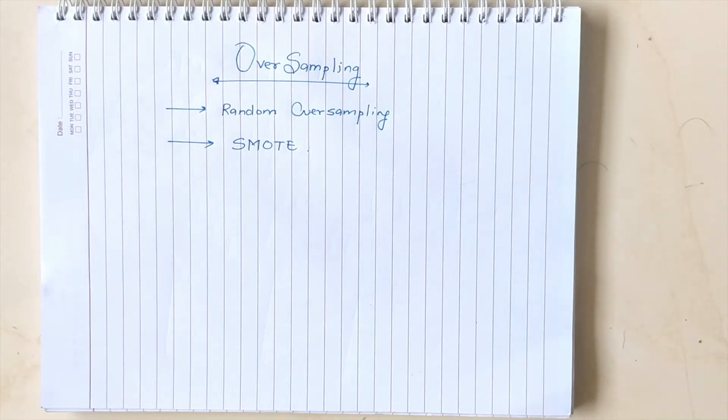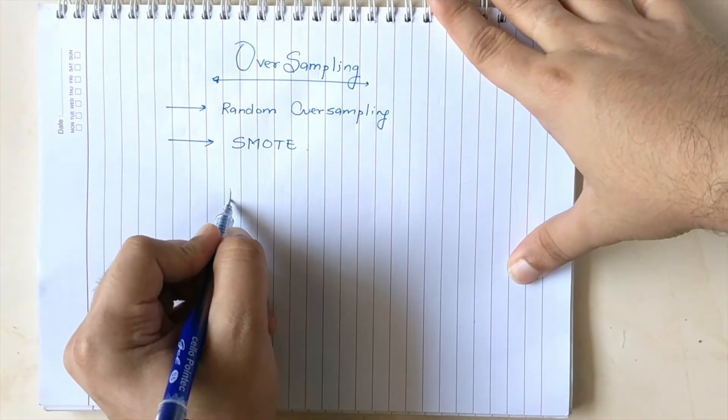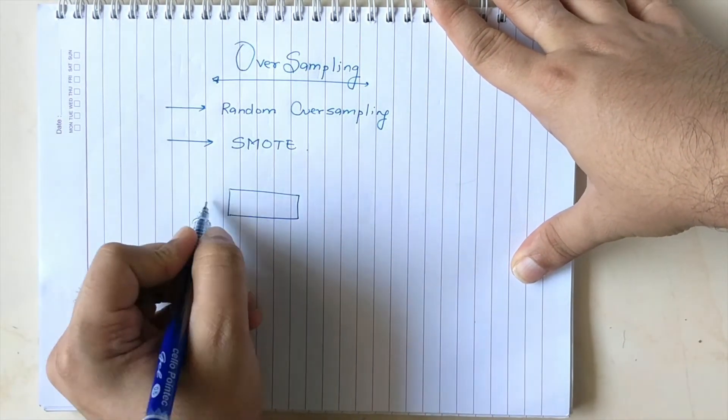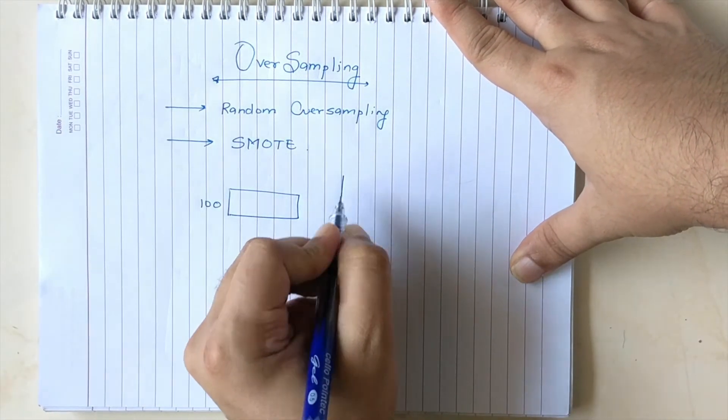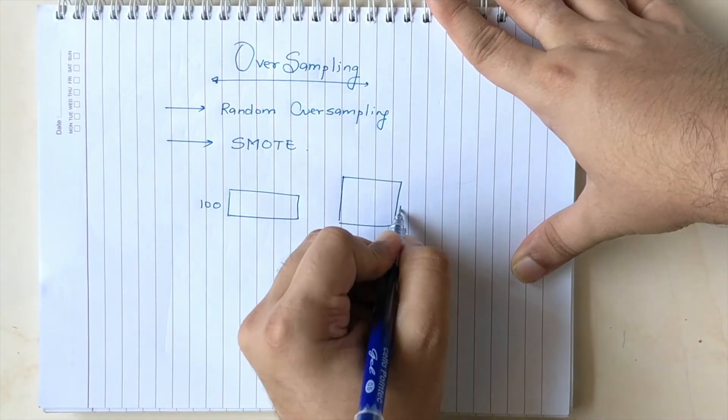The basic fundamental idea of oversampling is you take the minority class and try to create new samples that could match up to the length of my majority class samples. What I mean by that is if you have 100 samples in your minority class and 10,000 samples in your majority class,